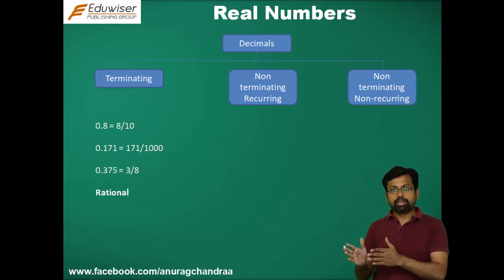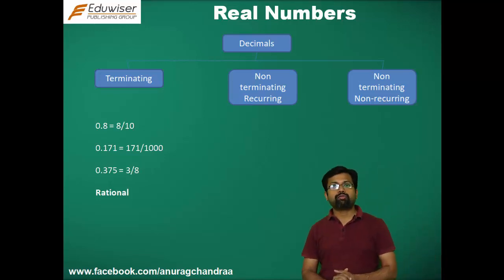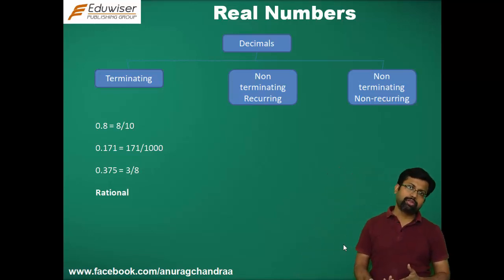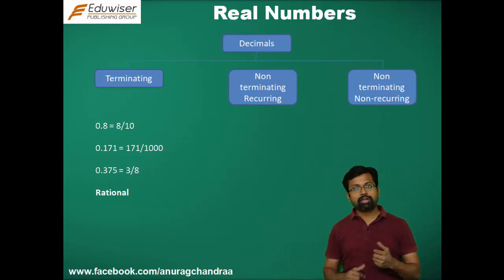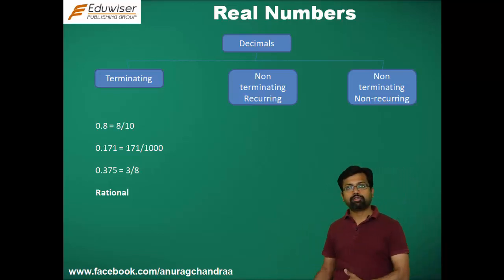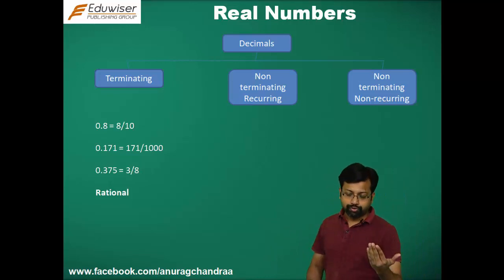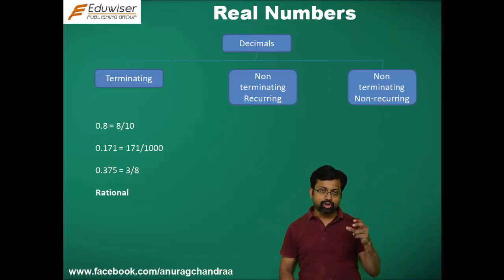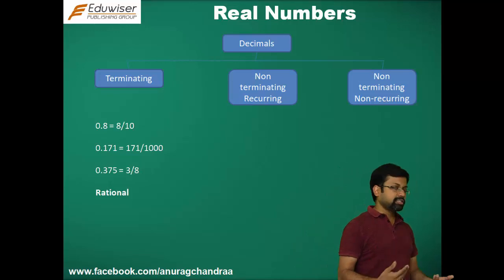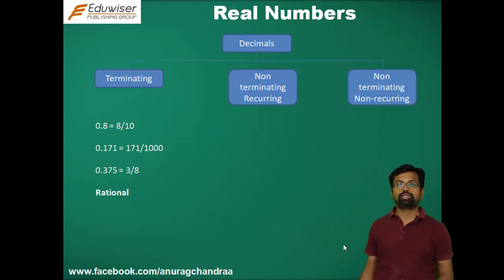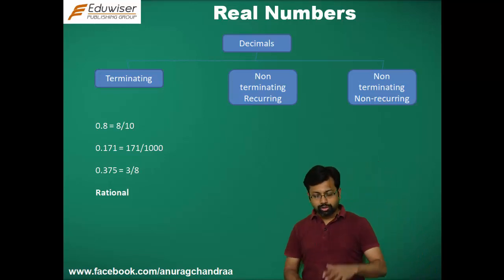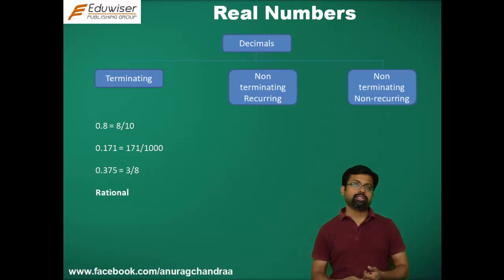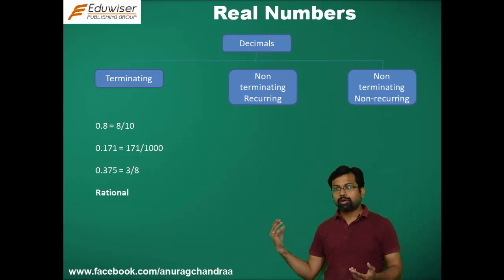Similarly, 0.171 is 171 by 1000, which is of the form P by Q with integers and Q not equal to 0, hence rational. Similarly, 0.375 — if you cancel out the common factors of 375 by 1000, you get 3 by 8, which is again rational because 3 and 8 are both integers and the denominator is not equal to 0. So any terminating decimal is going to be a rational number.